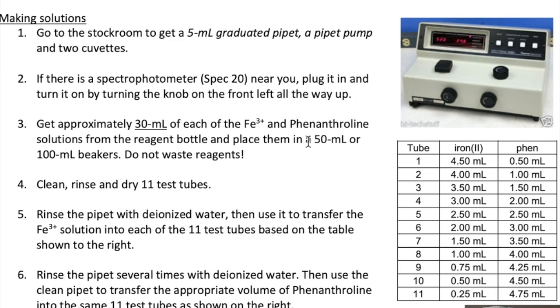Then use two small beakers to get approximately 30 milliliters of each of the Iron 3 Nitrate and Phenanthroline solutions. Don't get much more than 30 milliliters, as you'll only need that much for your experiment. Get 11 test tubes, clean them with soap, rinse well with water, and dry all the test tubes. Label the test tubes from 1 to 11.